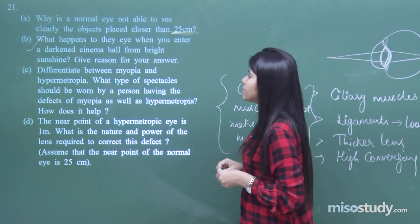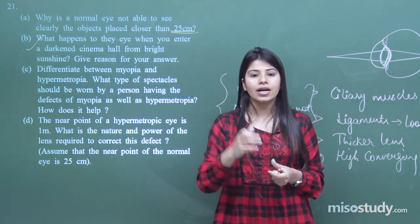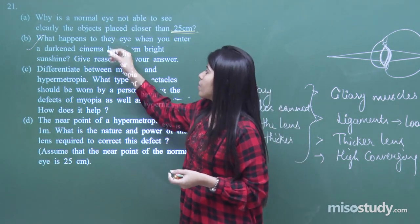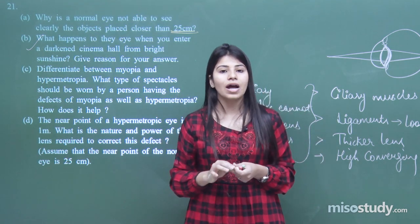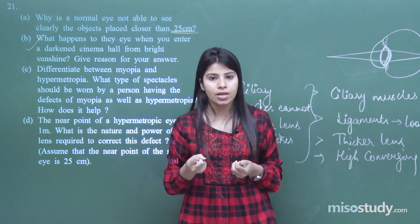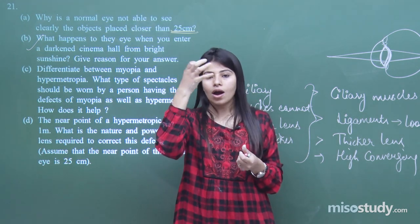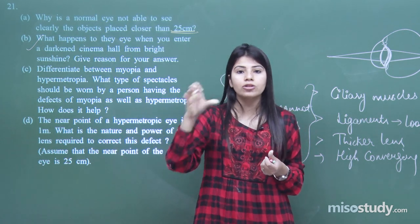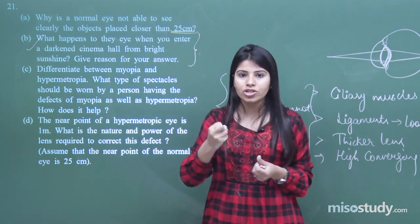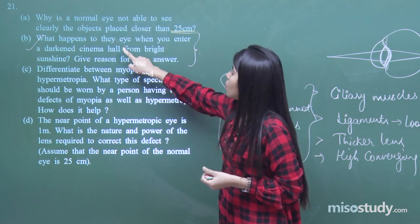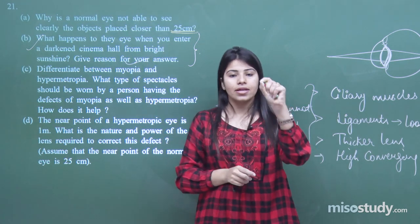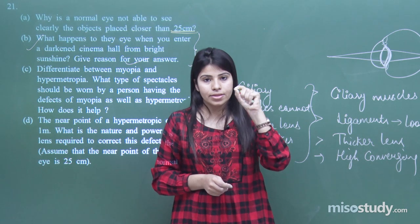What happens to the eye when you enter a darkened cinema hall from bright sunshine? When you enter a dim cinema hall, your pupil will expand with the help of the iris to fetch more light. When you are in a bright hall, the iris commands the pupil to reduce its size so less light enters your eye. You cannot see nearby objects immediately because the accommodation of your pupil takes time.